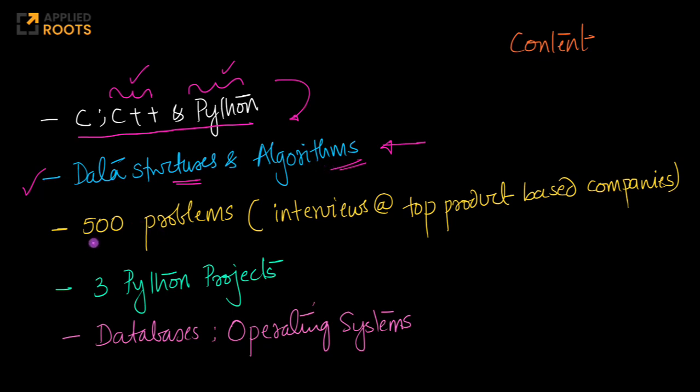In this course, we will solve approximately 500 problems which are often typically picked from top product-based companies. These are often asked in interviews at top product-based companies. We will also have three Python projects so that you understand the real-world applications of some of the data structures and algorithms that you've learned and how they can be used to solve real-world problems.